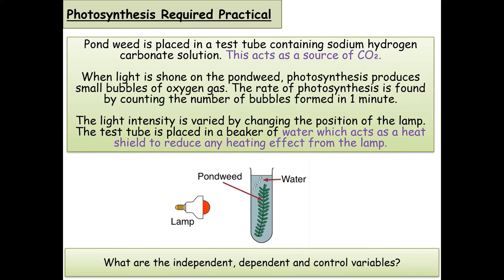Okay, so the independent variable in this case would have been what we changed. So that would have been the distance of the light source from the pondweed each time. The dependent variable is what we measure. So what did we measure during the practical? We measured the number of oxygen bubbles produced per minute.